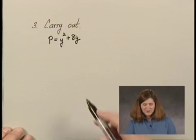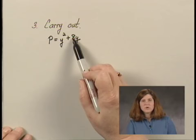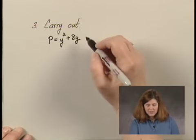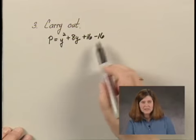I'm going to do this by completing the square. I want to add half of 8, which is 4, squared, which is 16. I can't just add 16. I have to add it and then subtract it, which means I've basically added 0.